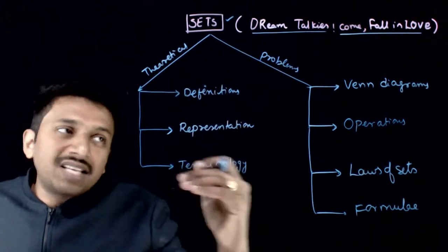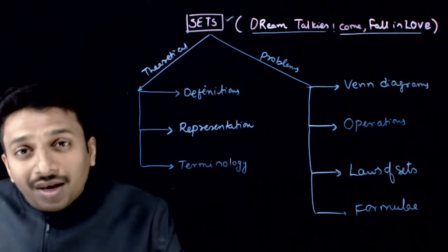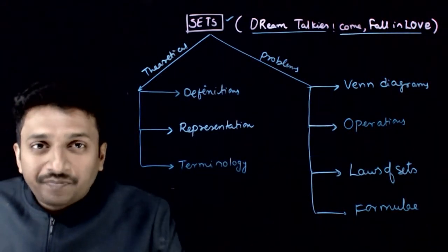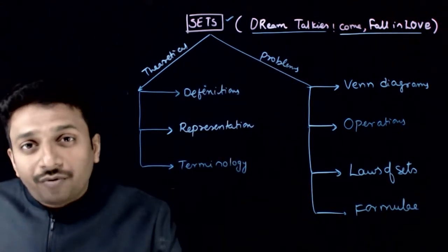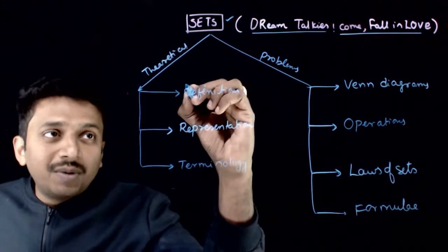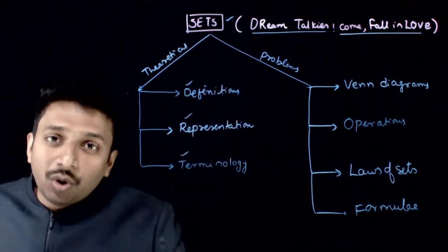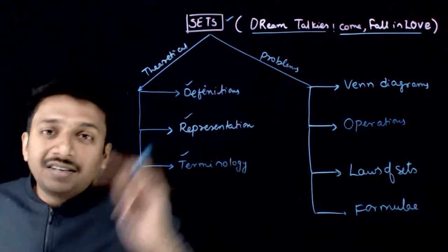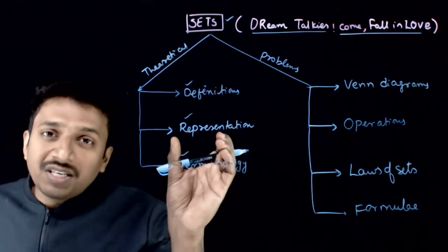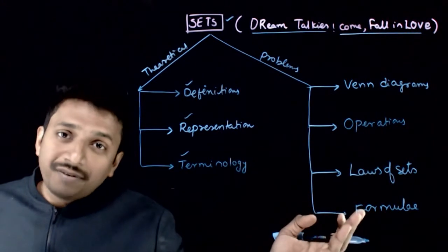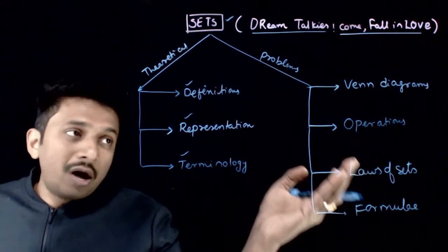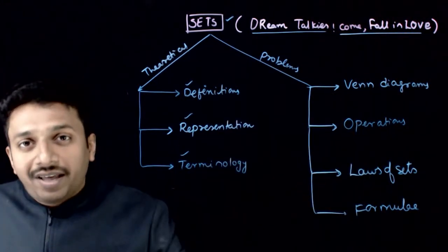These are the seven topics that you are going to learn in the topic of sets. And do you see what 'Dream Talkies Come Fall in Love' is? That is nothing but D, R, T denotes definitions, representations, and terminology. And 'Come Fall in Love' denotes formulas, laws, operations, and Venn diagrams.